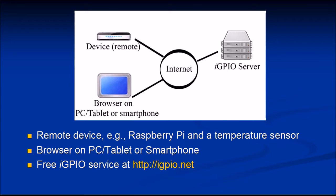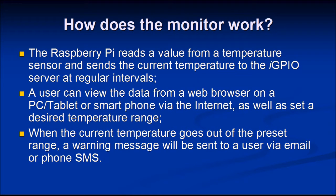The remote device, which in this example has a temperature sensor, works the following way. The device — in this example a Raspberry Pi — is connected to a temperature sensor, reads the temperature, and updates that value to the IGPIO server at regular intervals.